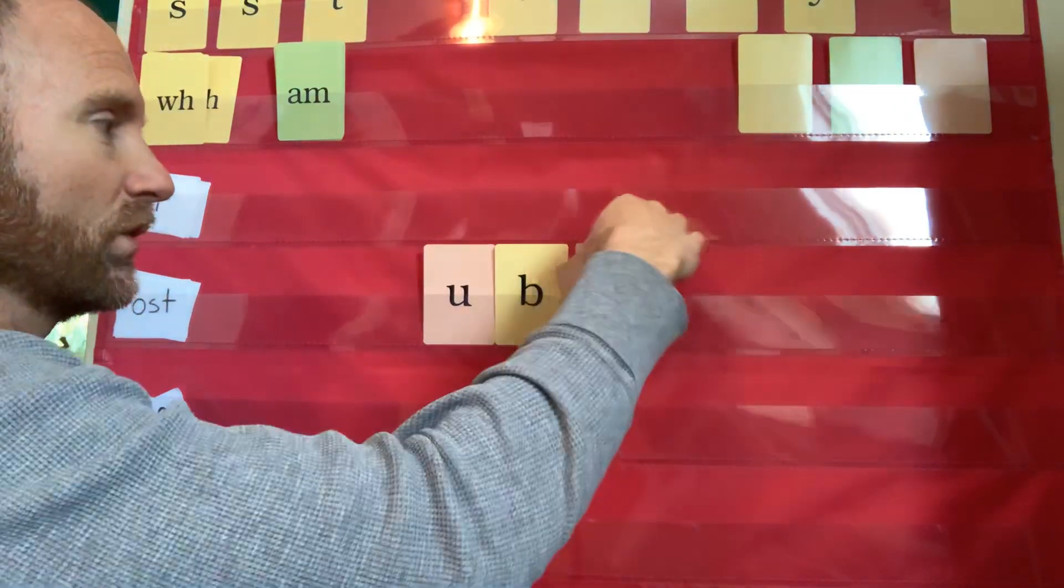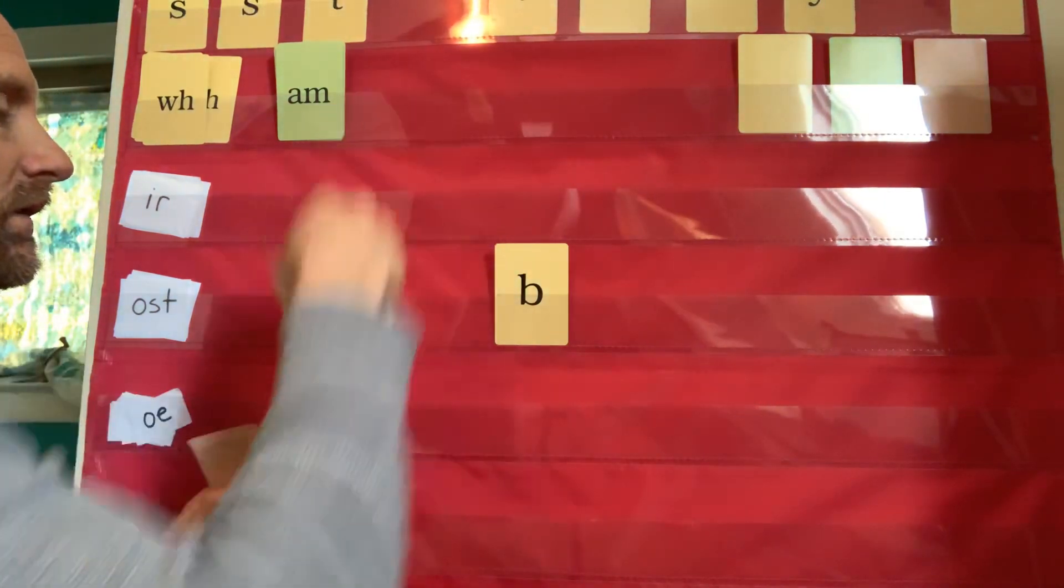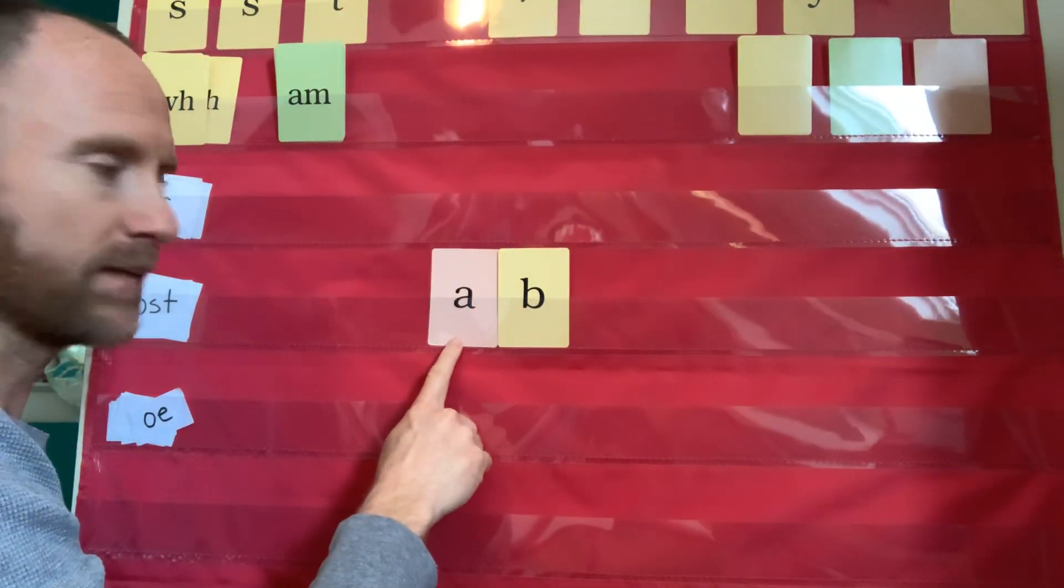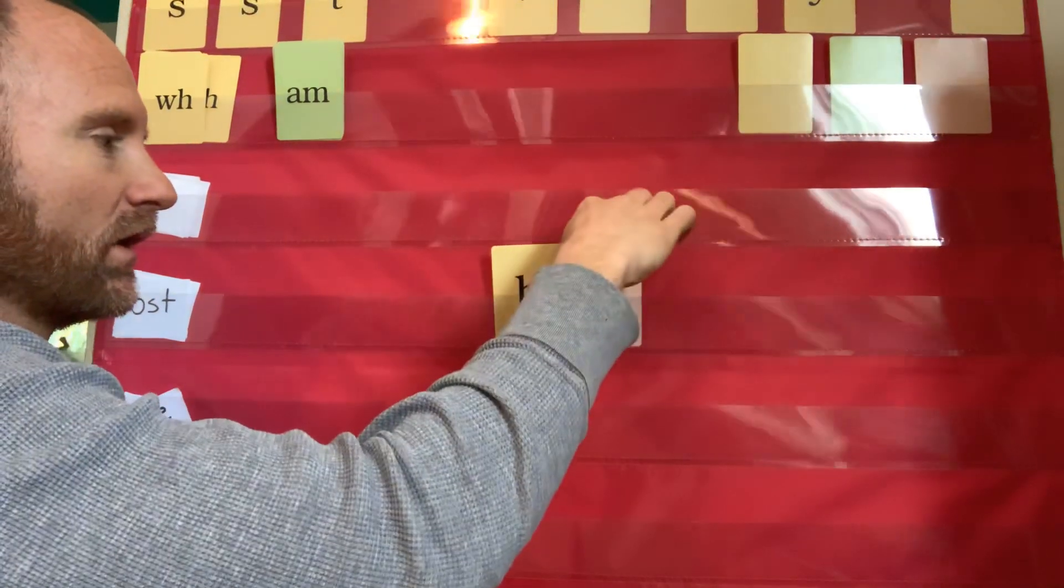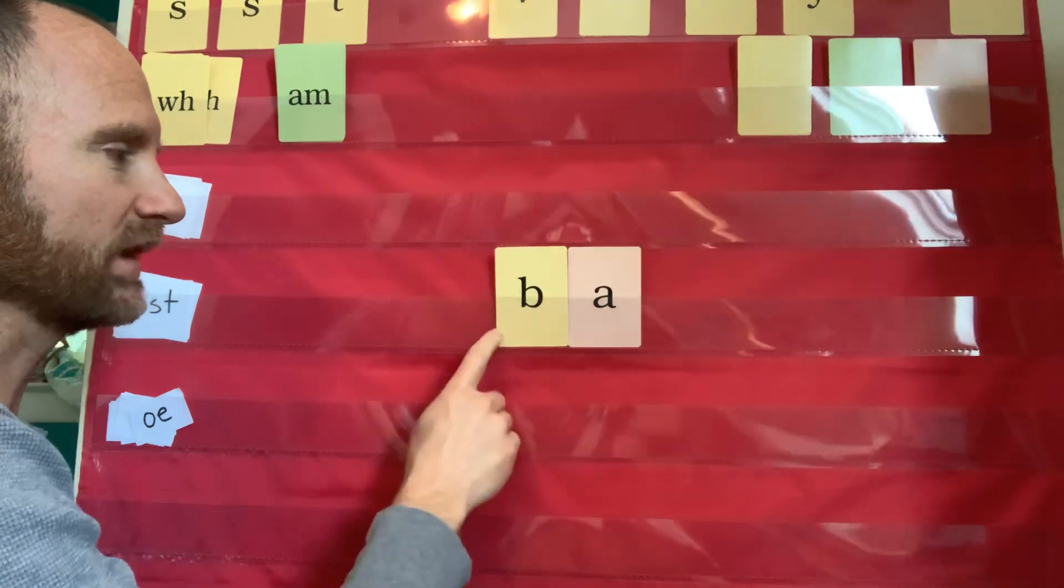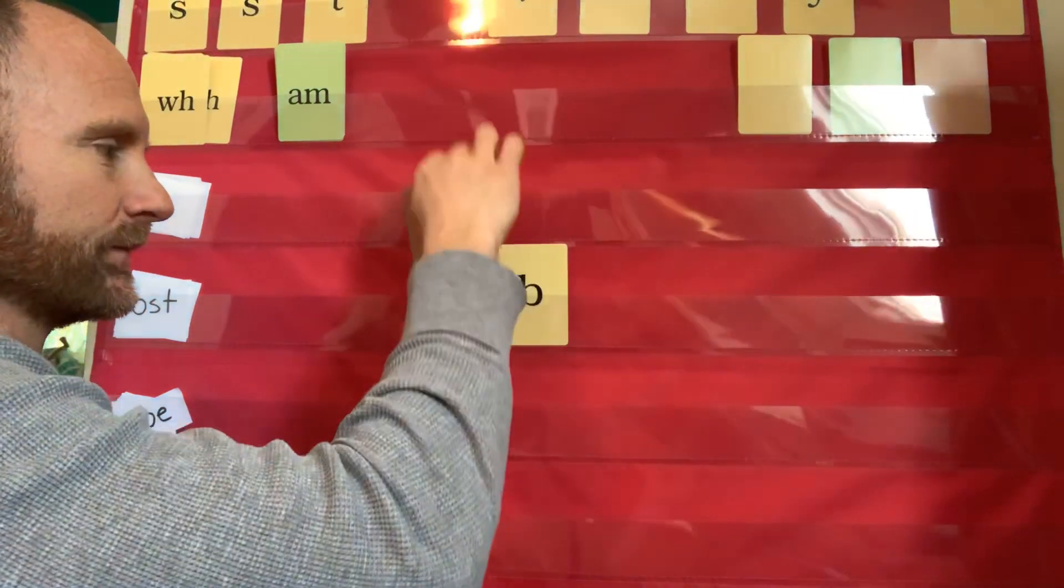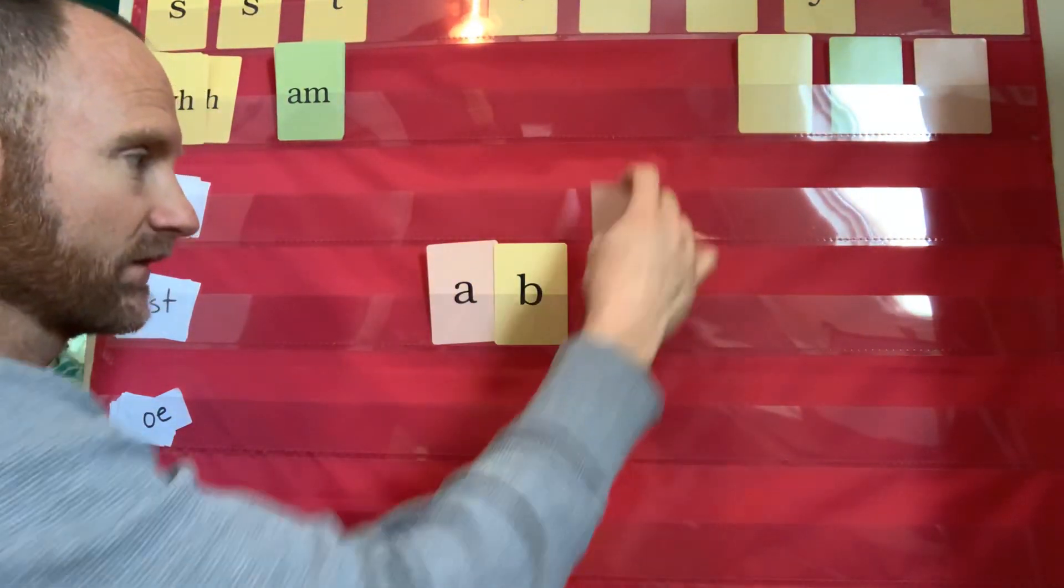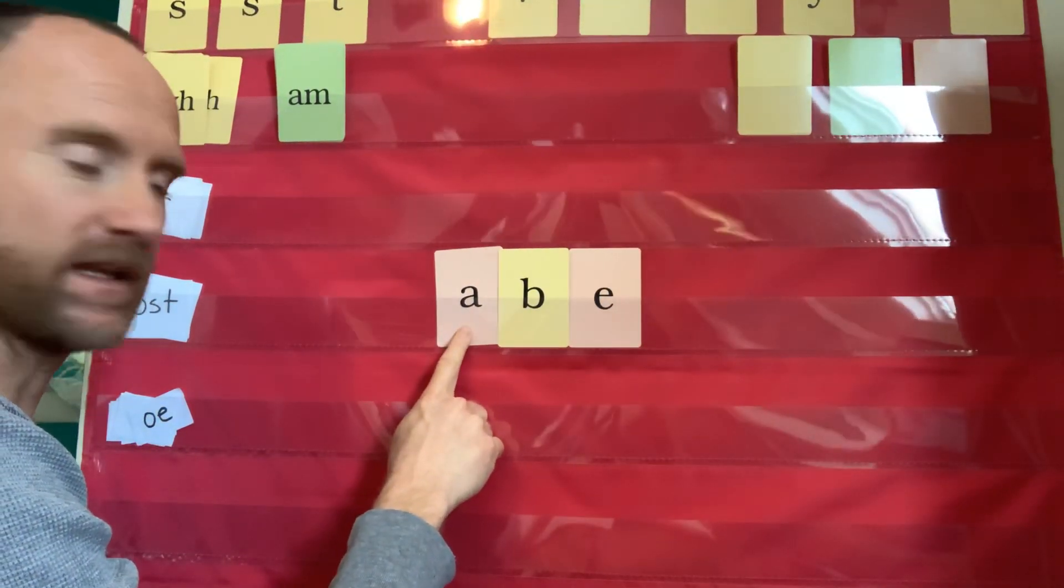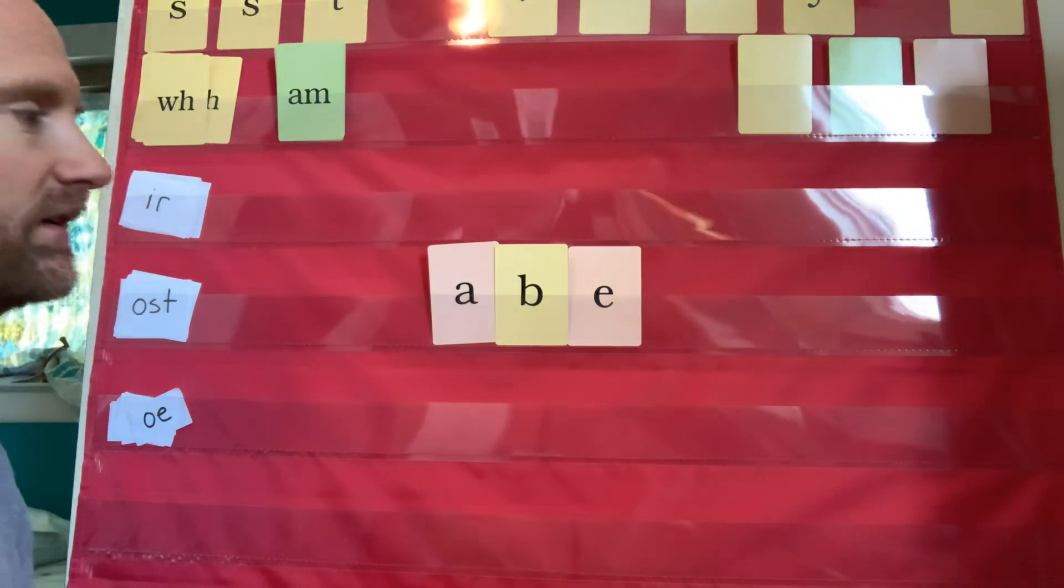Let's just do one more. Closed syllable. Sound. Ah. Blend it. Ab. Open syllable. Sound. A. Blend it. Bay. Vowel, consonant, E. What sound? A. Blend it. Abe. Very good.